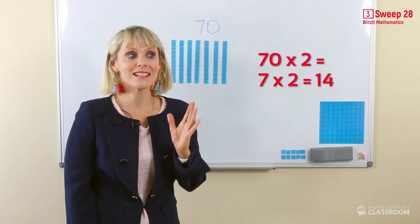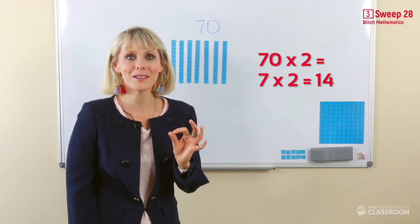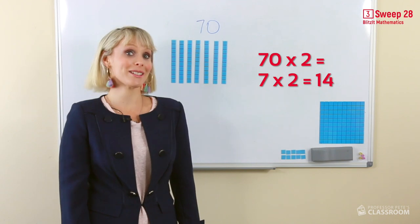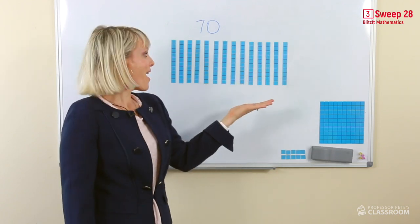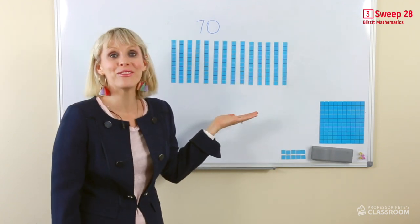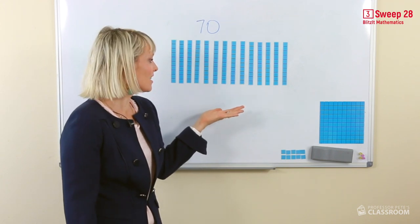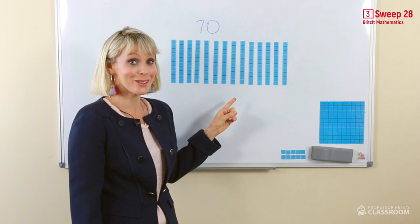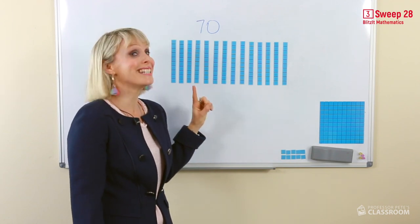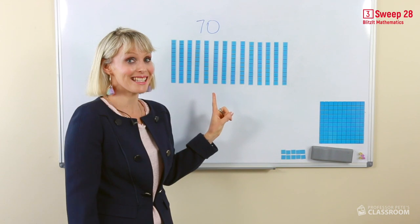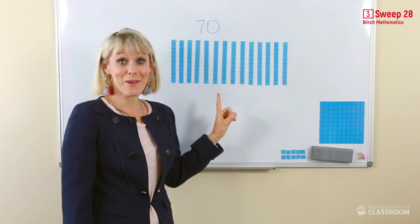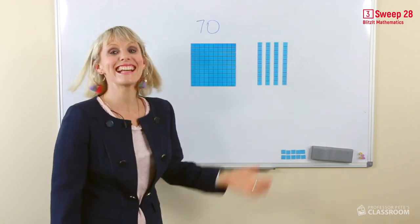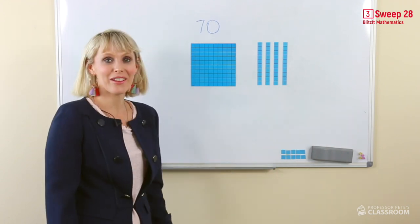So 7 tens, doubling it, equals 14 tens. Let's have a look at what that number looks like. Wow, here we have 14 tens. It's a lot of tens. We need to regroup because there is definitely 10 tens in here. Let's see what that looks like. Here it is.